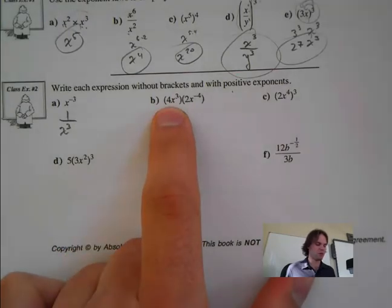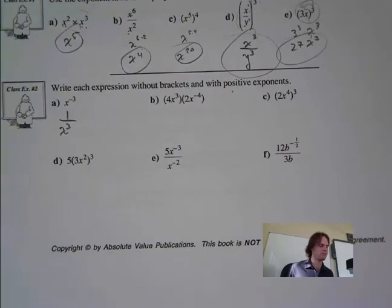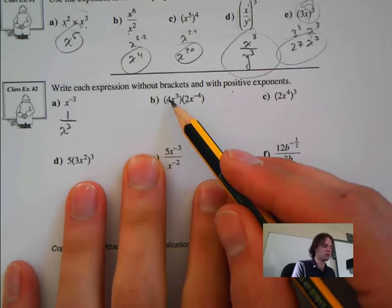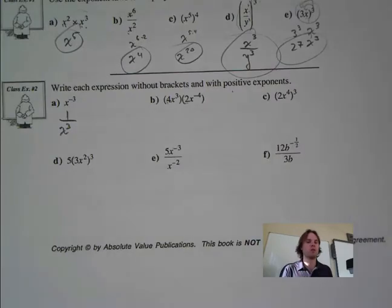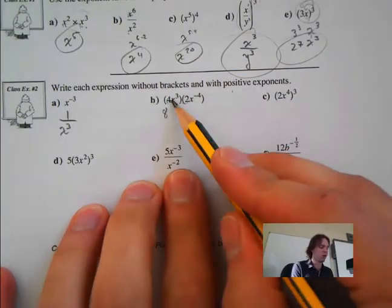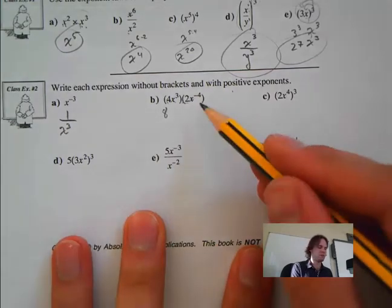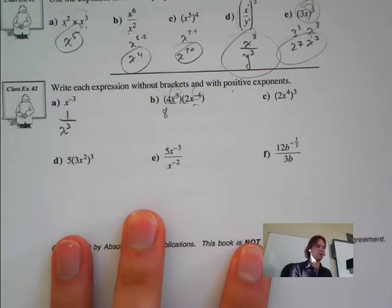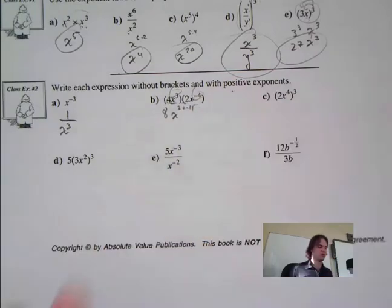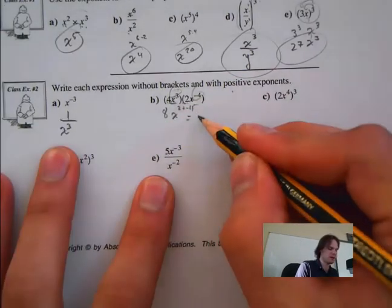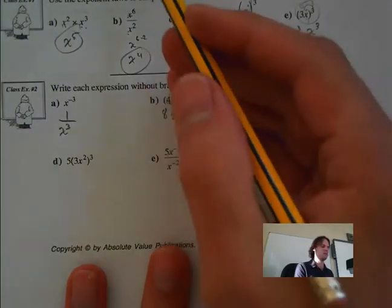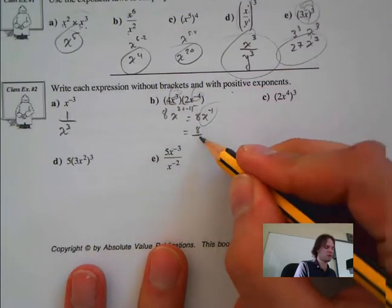This next one is a bit more complicated. We have the product rule — multiply the numbers together: 2 times 4 is 8. Then x to the 3 times x to the negative 4 — same base, product law — gives x to the 3 plus negative 4, which is x to the negative 1. Using the integral rule, that becomes 8 over x.